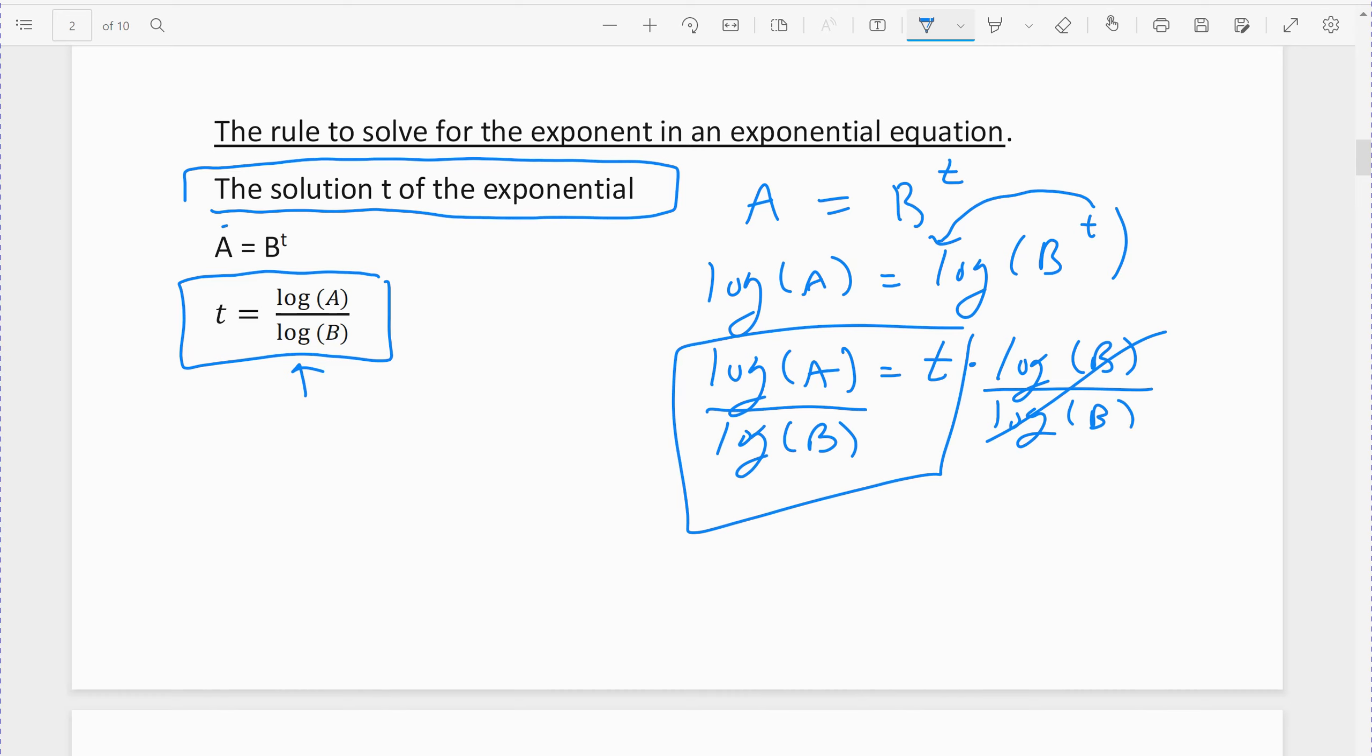A is the side it's equal to. B is the side with the base. If it was that one I had earlier, 2 equals 5 to the t, you solve that by taking the log of 2 divided by the log of 5. That's what t equals. Then you can type that out on your calculator. You do have to type out log of 2 divide by log of 5 exactly. And it comes out 0.43067.